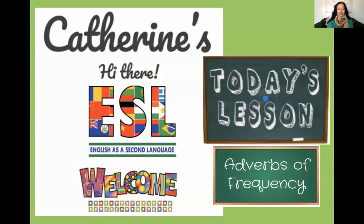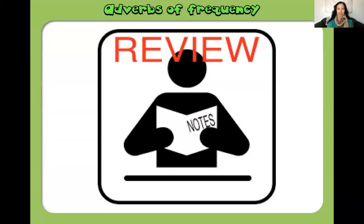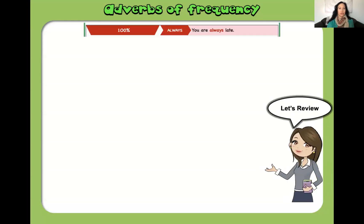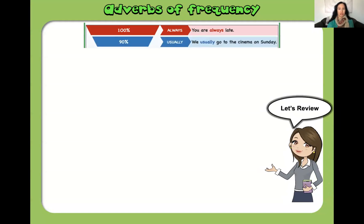Today's lesson: adverbs of frequency. Think of 'always' as a hundred percent — 'You are always late' means you are a hundred percent late. 'Usually' — 'We usually go to the cinema on Sunday' — that would be around 90% of the time. That's when we use the adverb 'usually'.